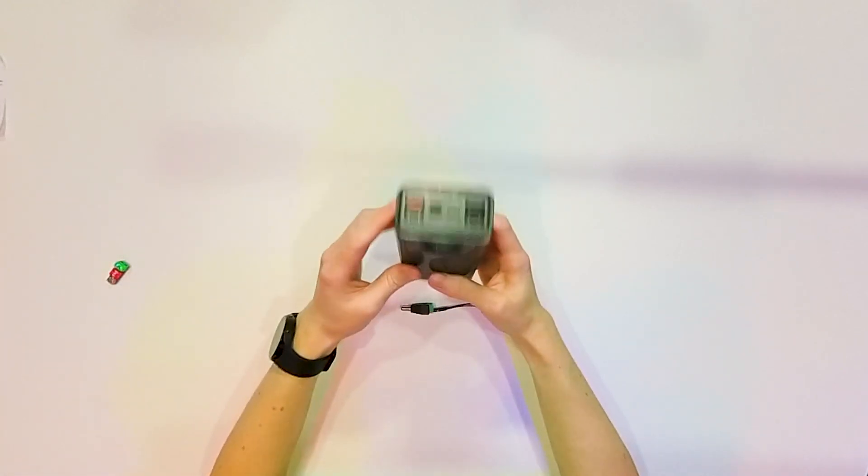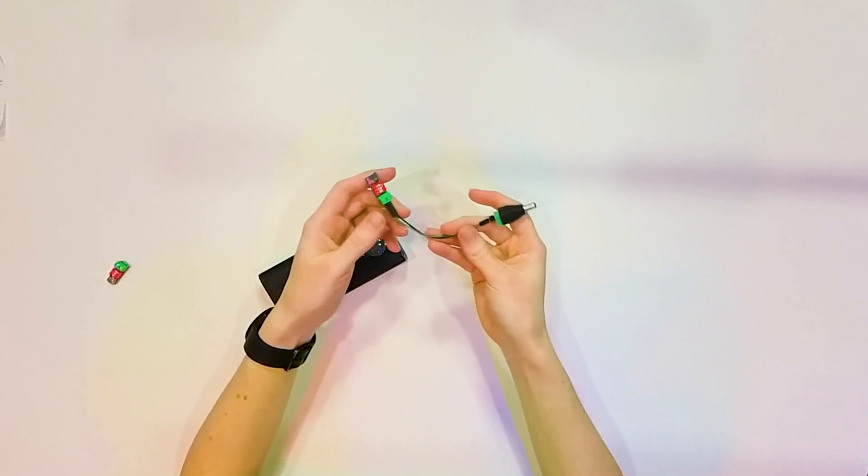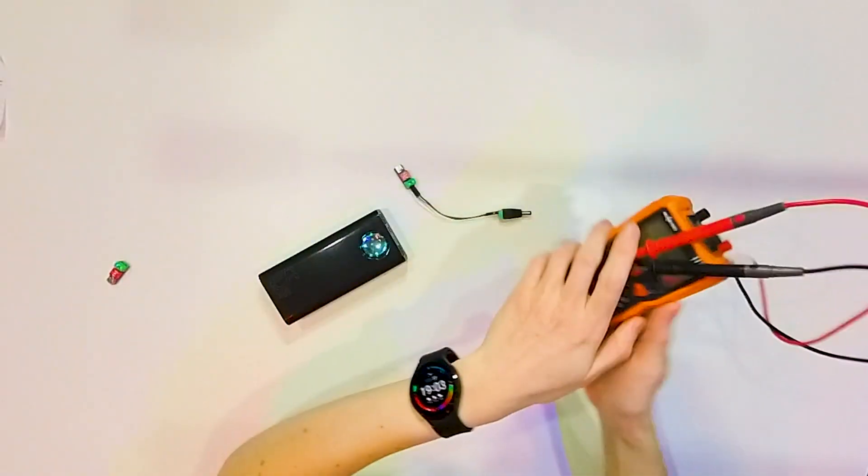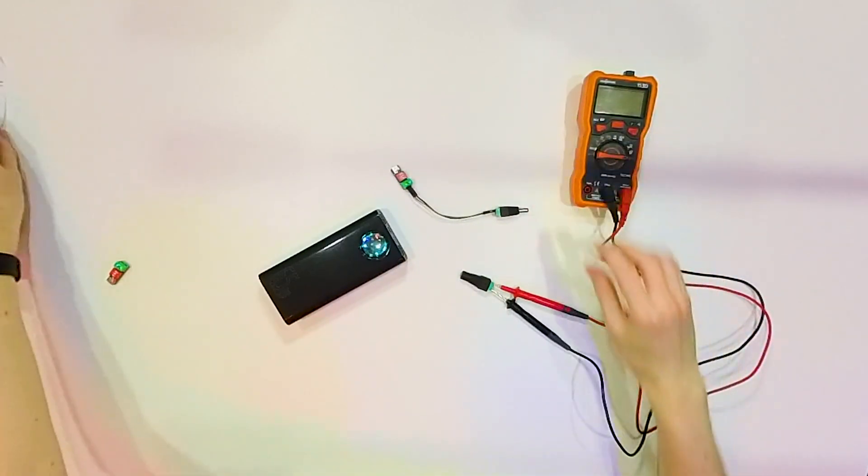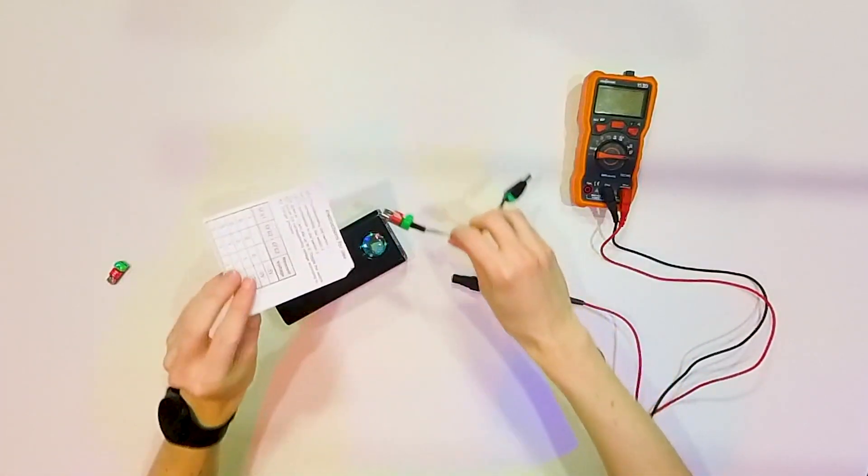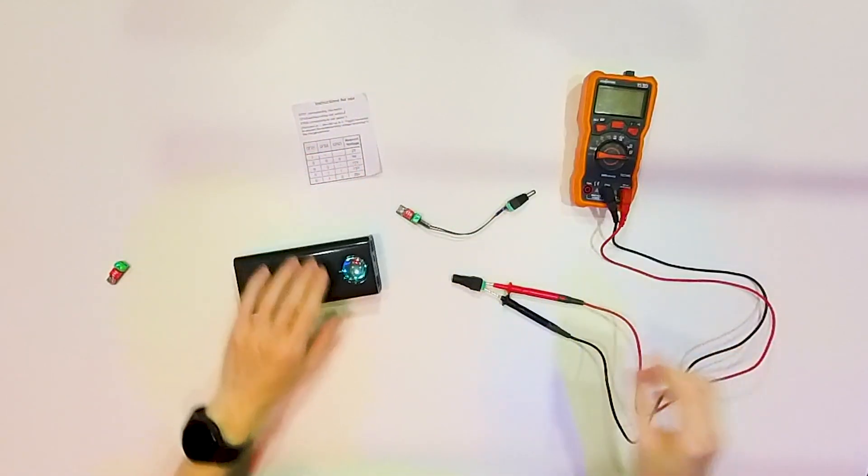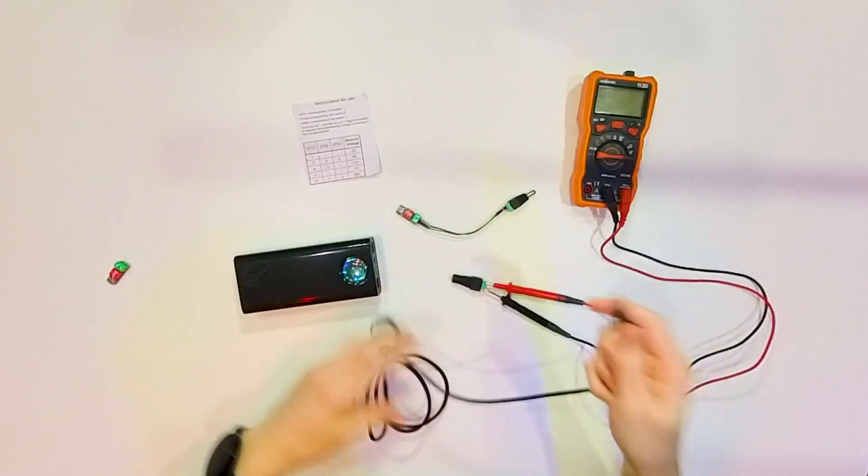Let's first show you how it works. I have a power bank with a power delivery function. I've connected a barrel cable to this USB-C trigger, and here I have a multimeter. I will show you the voltage because I can set what voltage it should output. I have a list of the combinations, so let me show you how it works.